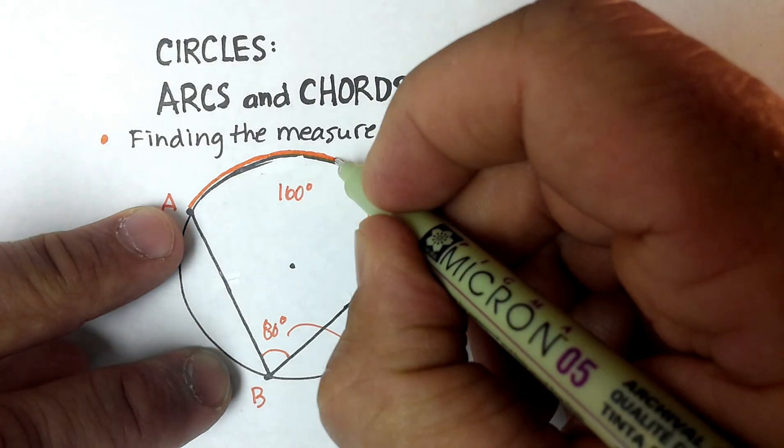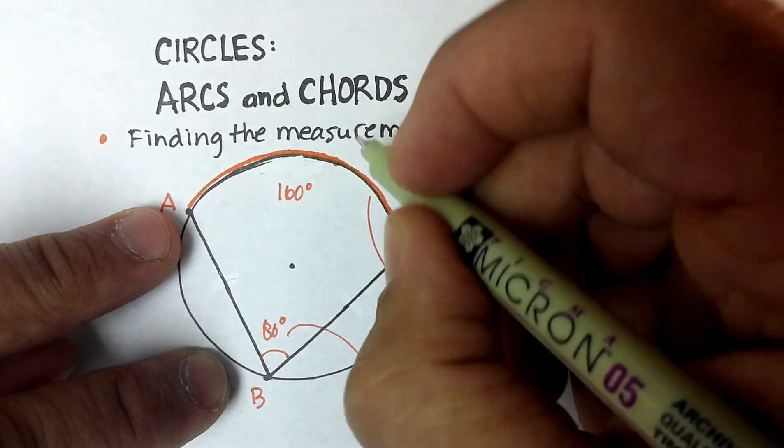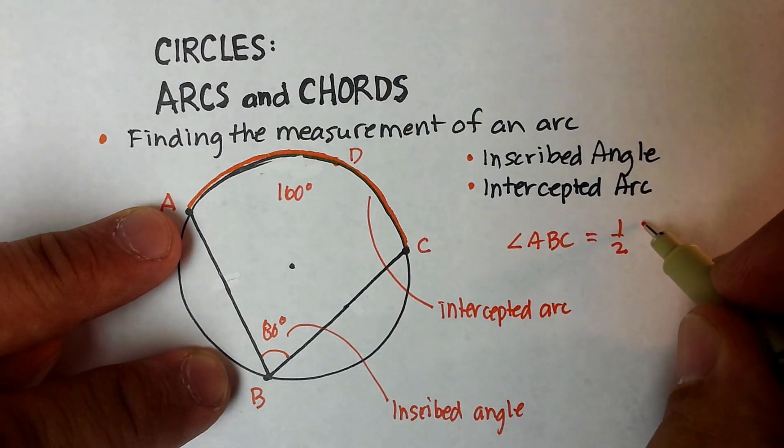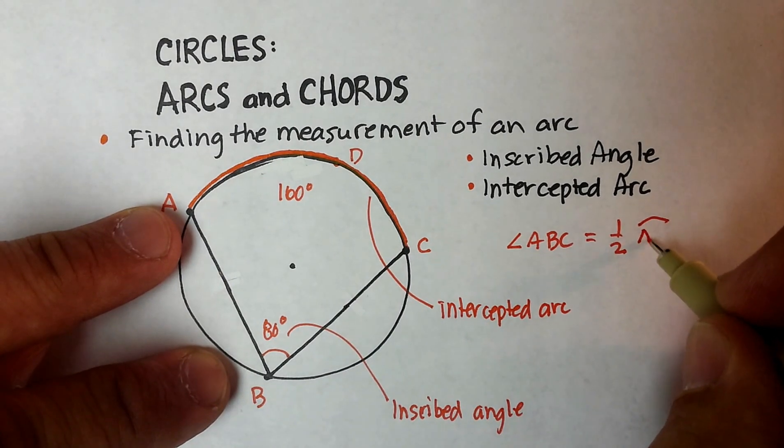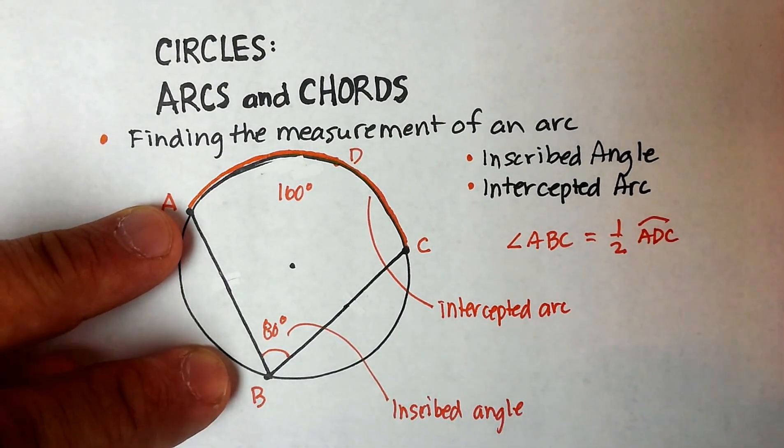So that would be, we should put another point there, so let's call that D. So one-half of arc ADC.